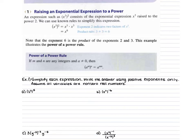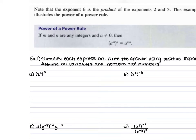If we look at example 1a, we have 2 cubed raised to the 5th power. Because that 3 is being raised to the 5th power, we are just going to keep the 2, take the 3, multiply it by the 5, and that gives us 2 to the power of 15. With this power of 15 being so large, we are just going to leave this as 2 to the 15th power instead of actually multiplying it out 2 times itself 15 times.